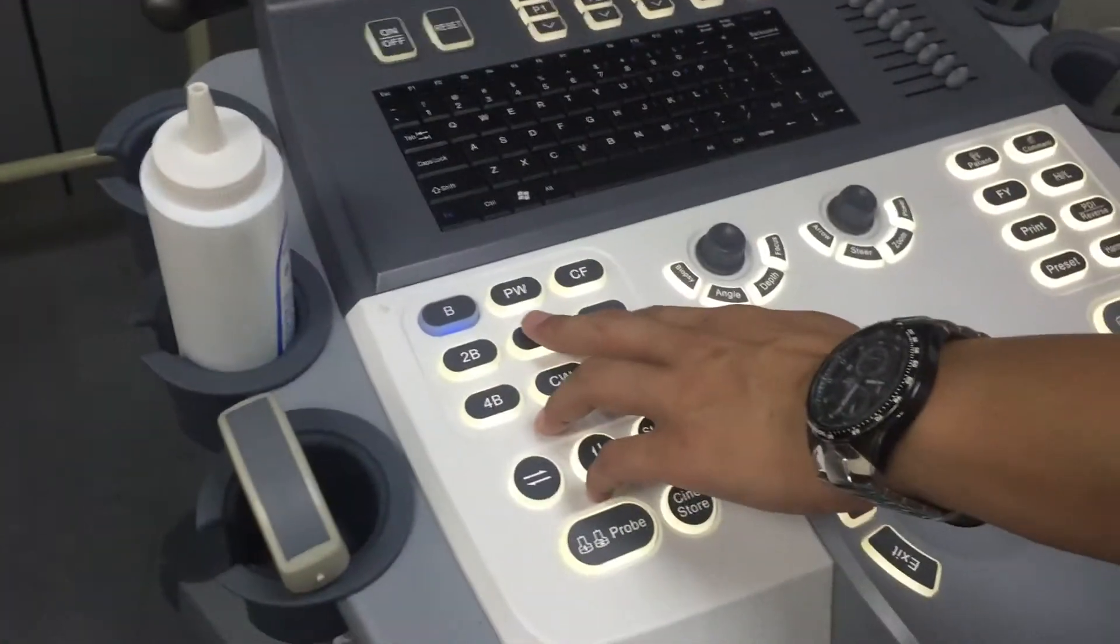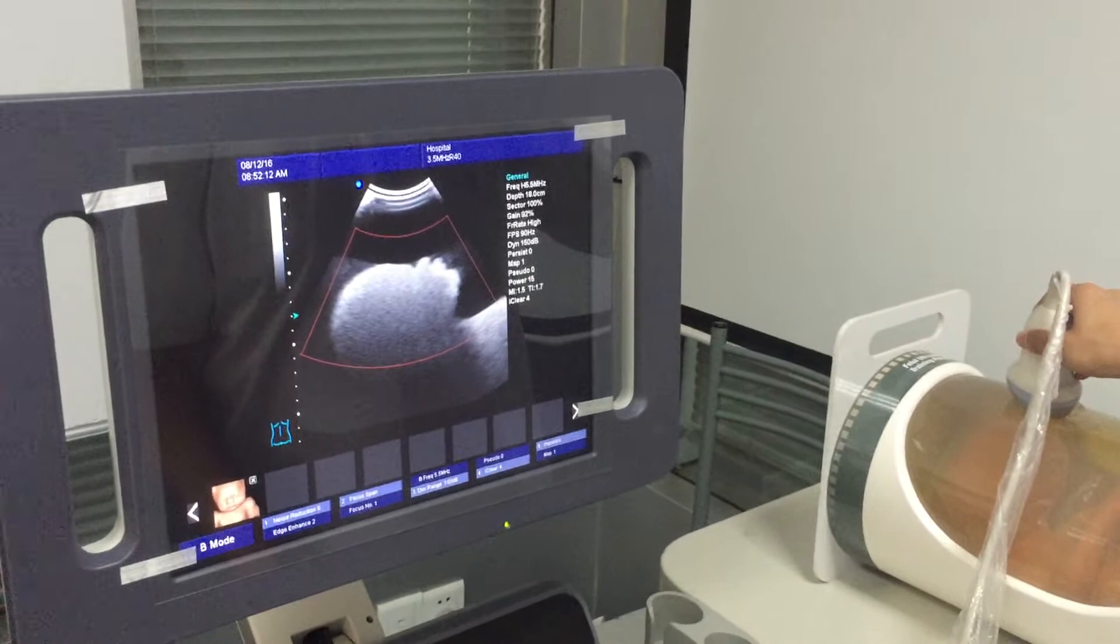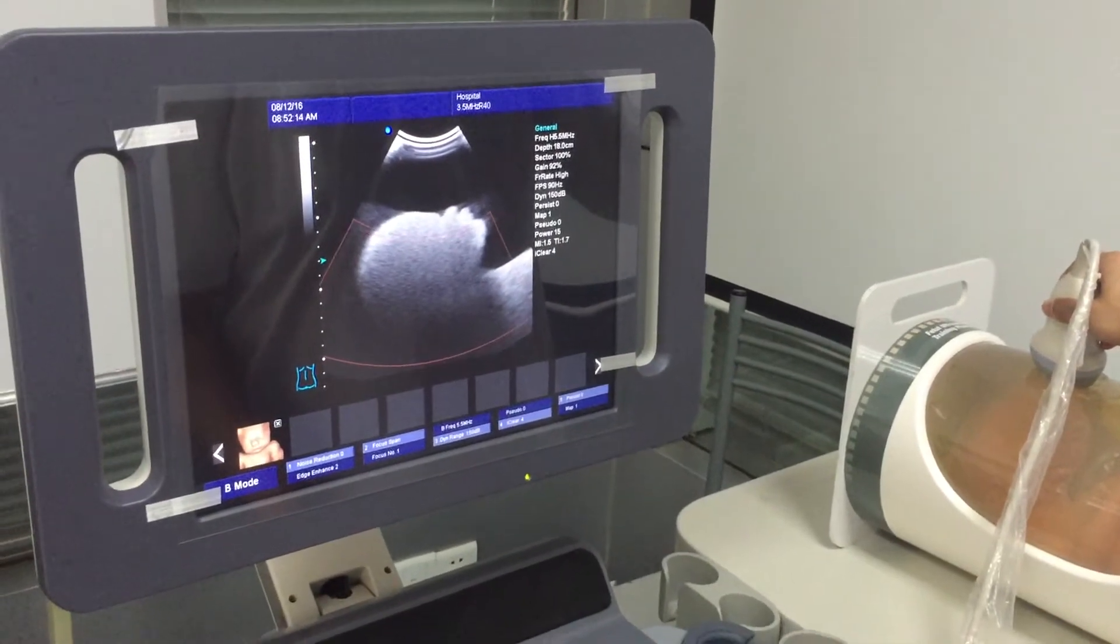After that, place 3D 4D key. Then, adjust the size of sampling frame.